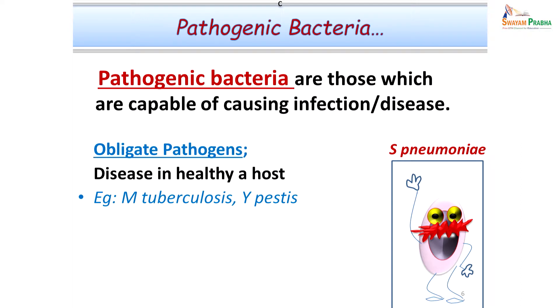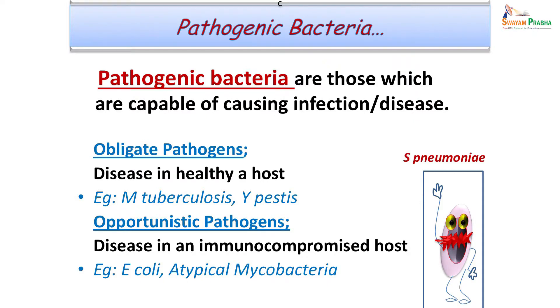Coming to pathogenic bacteria: pathogenic bacteria are those which are capable of causing infection or disease in a healthy person. For example, Mycobacterium tuberculosis and Yersinia pestis. The other group are called opportunistic pathogens, wherein they cause infection only in the immunocompromised host. Examples here include Escherichia coli, a member of our own gut flora, and atypical mycobacteria, which can be present in the environment or as a commensal on the genital area, and could cause infection if the host is immunologically compromised. So these are the two different types of pathogens we can classify.